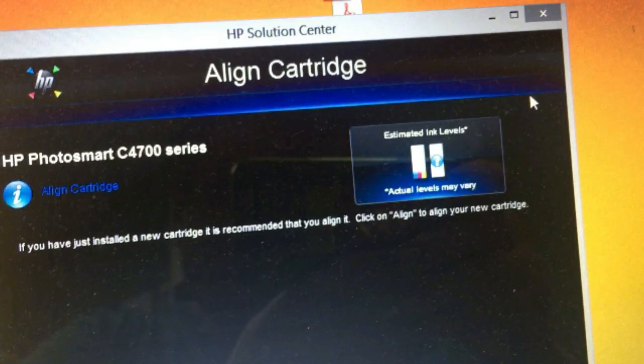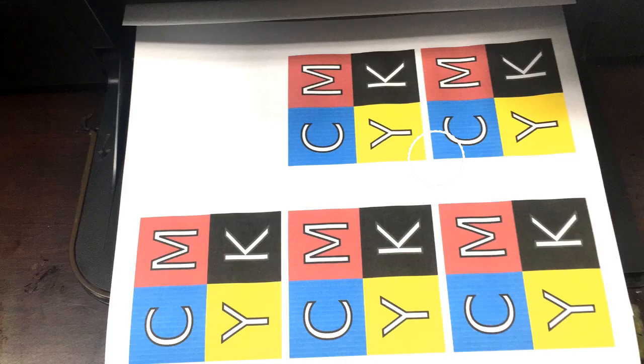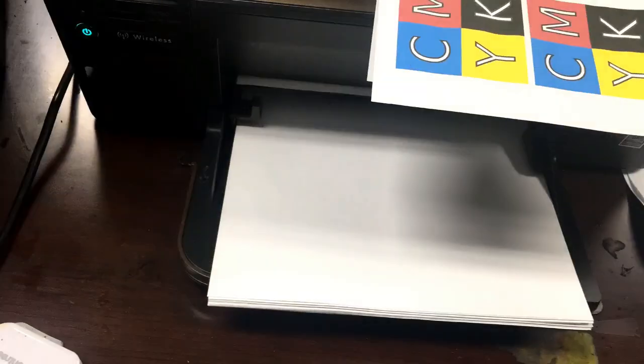You can see after we click OK, the ink level of black becomes a question mark. That means the printer will no longer track the ink level. So we can print forever. Just pay attention to the printout quality and add ink as needed.